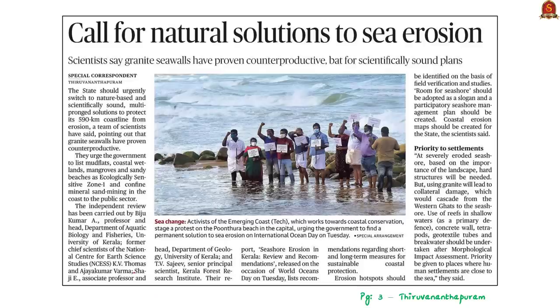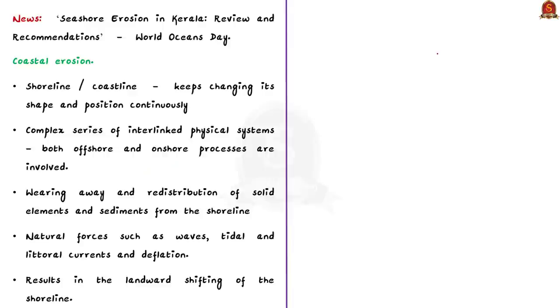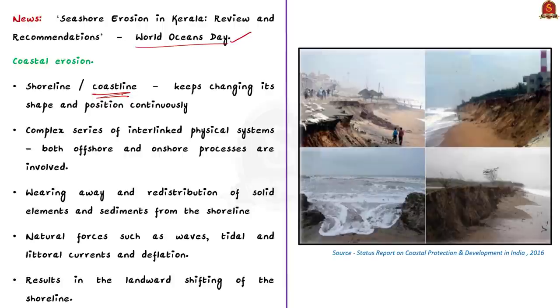Now, let us take up this news article. It is based on the report titled Seashore Erosion in Kerala: Review and Recommendations. This report was released on World Oceans Day. This report listed recommendations regarding short term and long term measures for sustainable coastal protection. So, in this context, let us see some important facts regarding coastal erosion. First, what is a coastline? Coastline refers to the boundary between land and sea. This boundary keeps changing its shape and position continuously due to dynamic environmental conditions. Coastline is a complex series of interlinked physical systems in which both offshore and onshore processes are involved. And one of these physical processes is the coastal erosion.